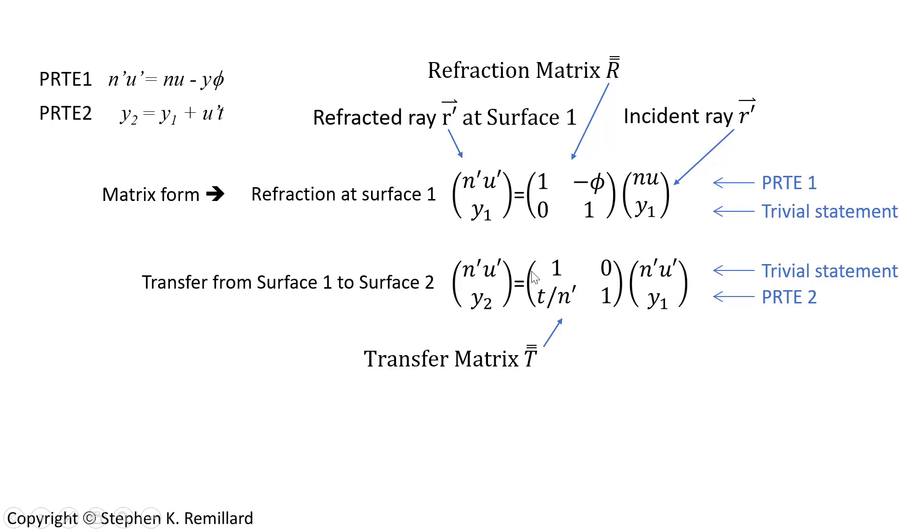This matrix takes the same form every time a transfer occurs, and so it goes by the general name of the transfer matrix and given by t. The double line above the t is my symbol for matrix. I don't mean tensor, I just mean matrix by that.